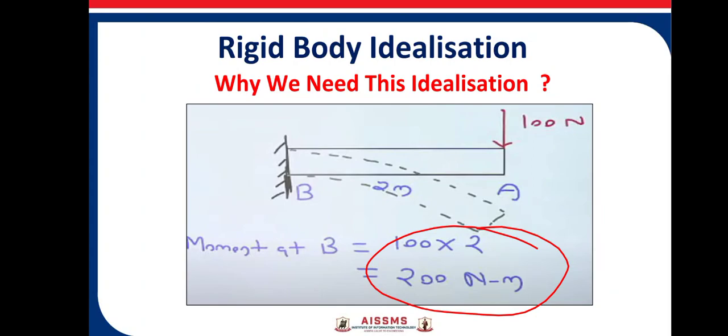Here, I am exaggerating the deformation. Now, tell me, whether this distance between A and B will be exactly 2 meter after application of 100 Newton force at point A? No, this distance will not be exactly 2 meter. This distance is going to change slightly. And if I calculate moment by considering deformation, it is going to be very complicated calculation, a very complicated analysis, and final answer will not be very different from 200 that we have calculated assuming rigid body.